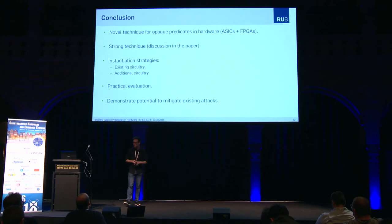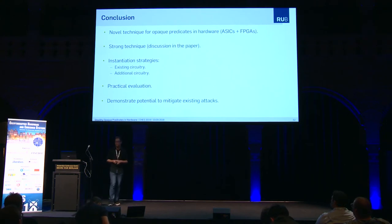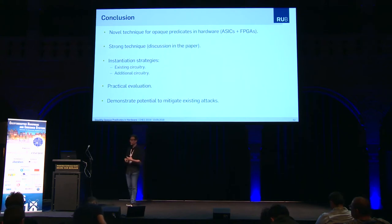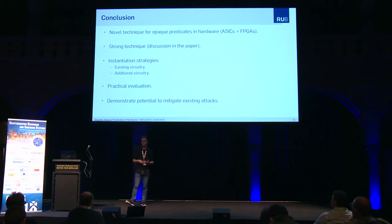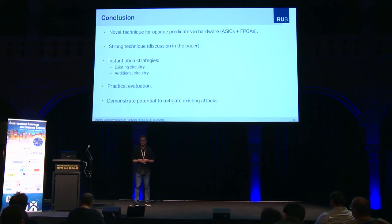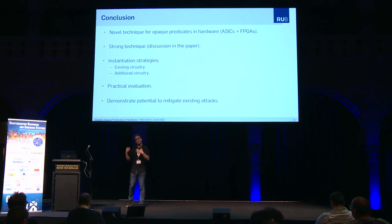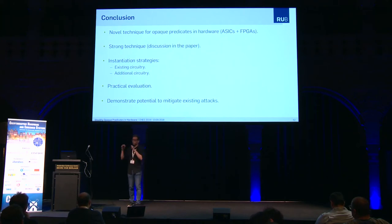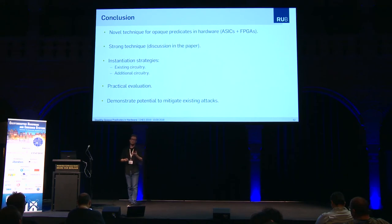So let's conclude. In our paper, we proposed a novel technique for hardware opaque predicates applicable to both ASICs and FPGAs. It is a strong and stealthy technique because of the use of existing circuitry and common structures, with an extended stealthiness discussion in the paper. We propose two instantiation techniques — with existing circuitry and new circuitry — and provide a practical evaluation for both the malicious use case and a defensive application as in the watermarking scheme. Thank you.